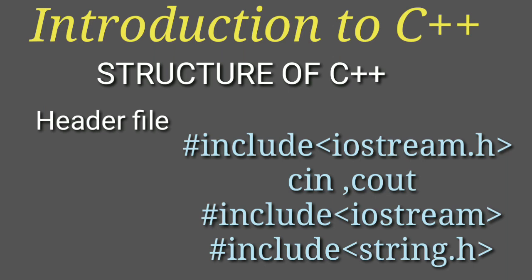Let me discuss one by one. The first one is the header file. The header file should be attached to your program, like iostream, string, math, and so on. For example, iostream includes the cin and cout statements. If you fail to attach it, you will get errors in your cin and cout statements.